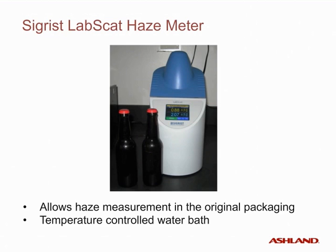Our Seagrist Lapscat haze meter allows measurement of haze in the original packaging — bottles do not have to be opened to make the measurement. This allows cycling of the beer from hot to cold to perform accelerated aging without exposing the beer to the environment. The color of the bottle has no impact on the haze measurement. This haze meter has temperature-controlled capacity within the water bath to hold the samples at the desired temperature while the measurement is being made, generally at 0 degrees Celsius.